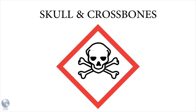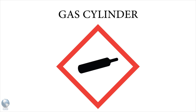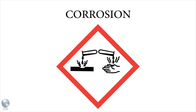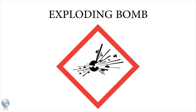Chemicals with acute toxicity are chemicals that will produce adverse effects following a single dose of the substance. The gas cylinder pictogram alerts you to the physical hazards inherent in the use and storage of compressed gas. The corrosion pictogram should prompt you to be especially aware of PPE and storage requirements.